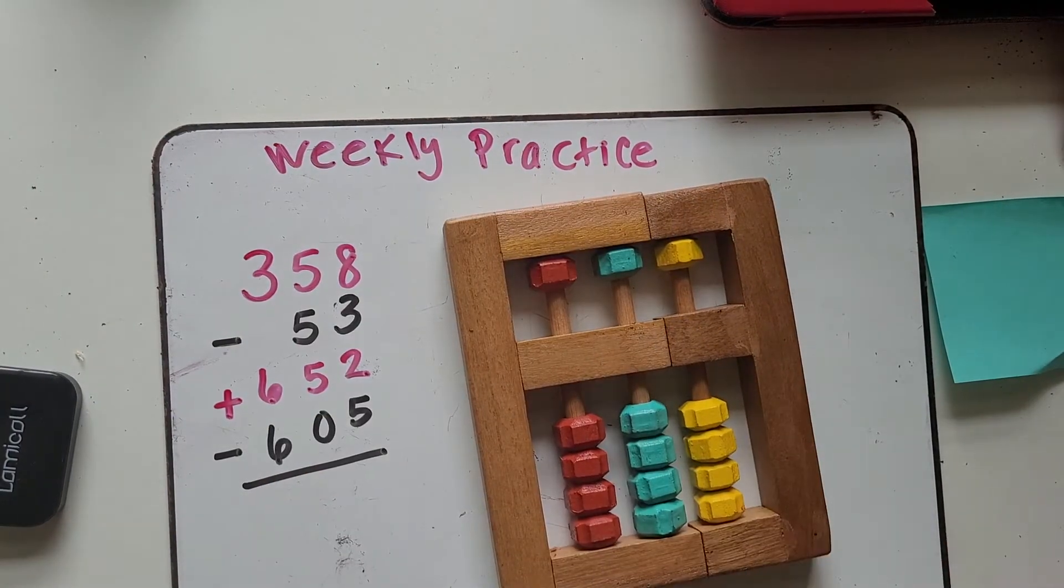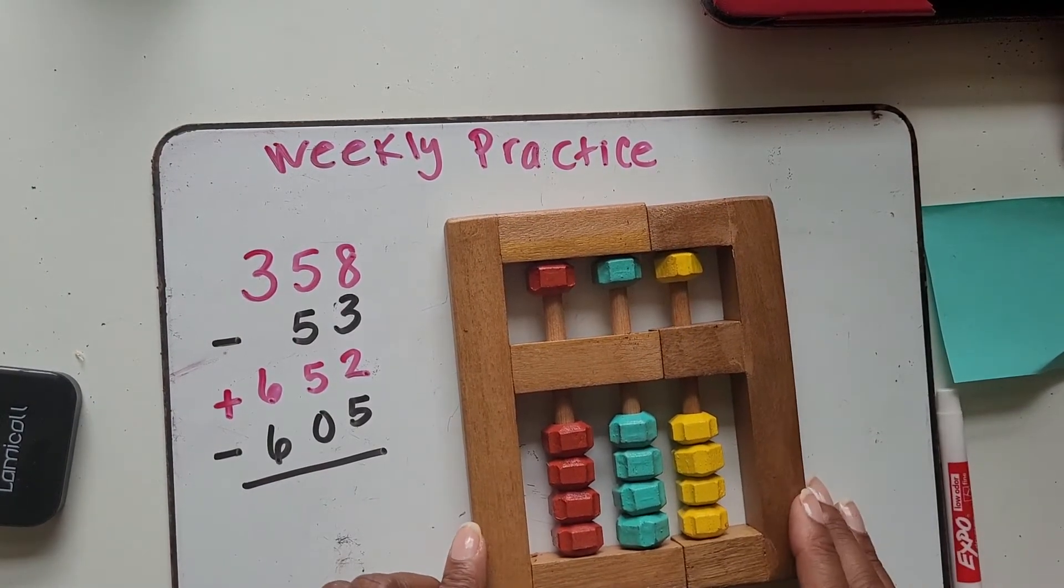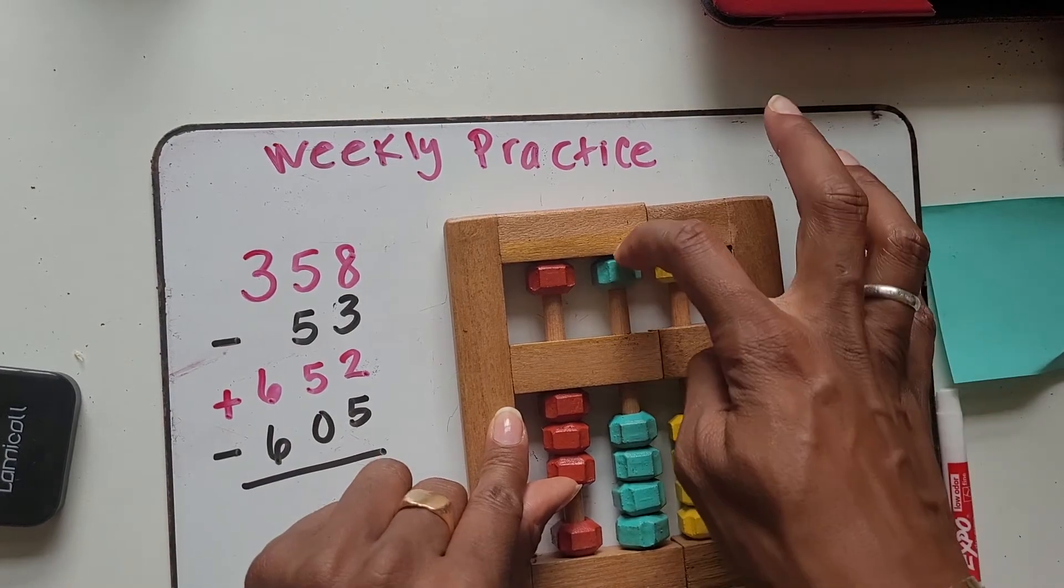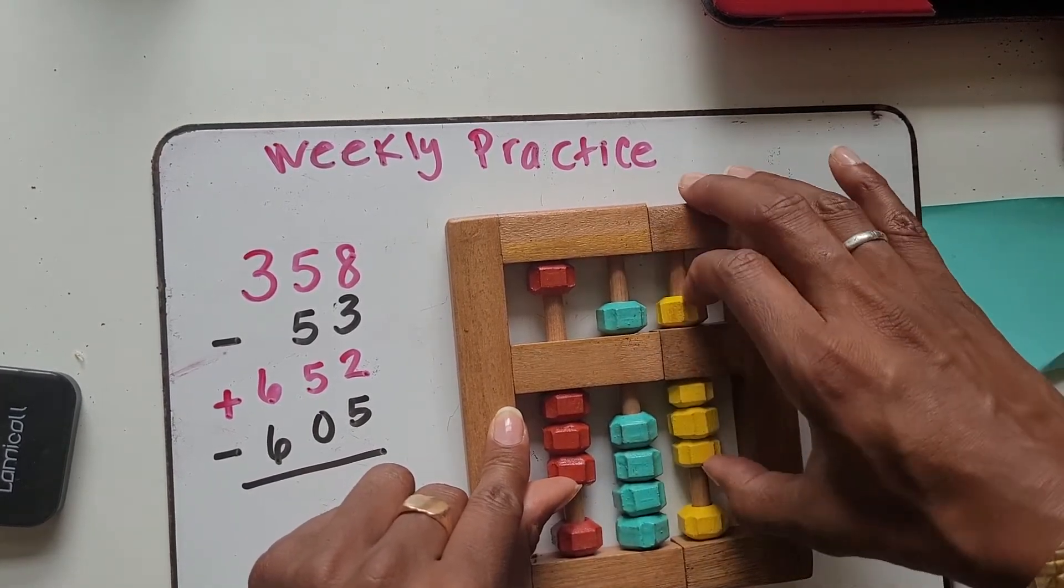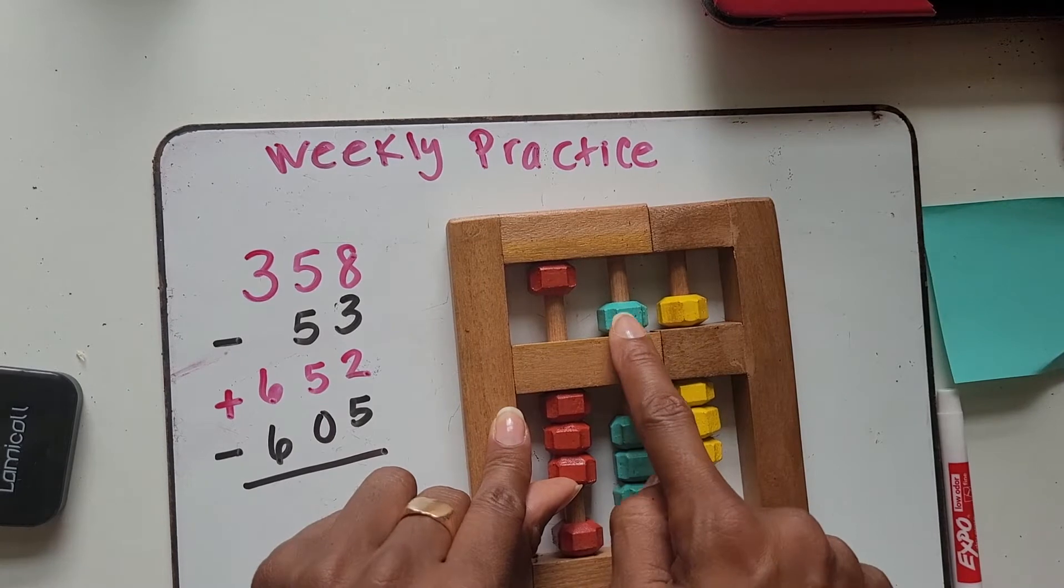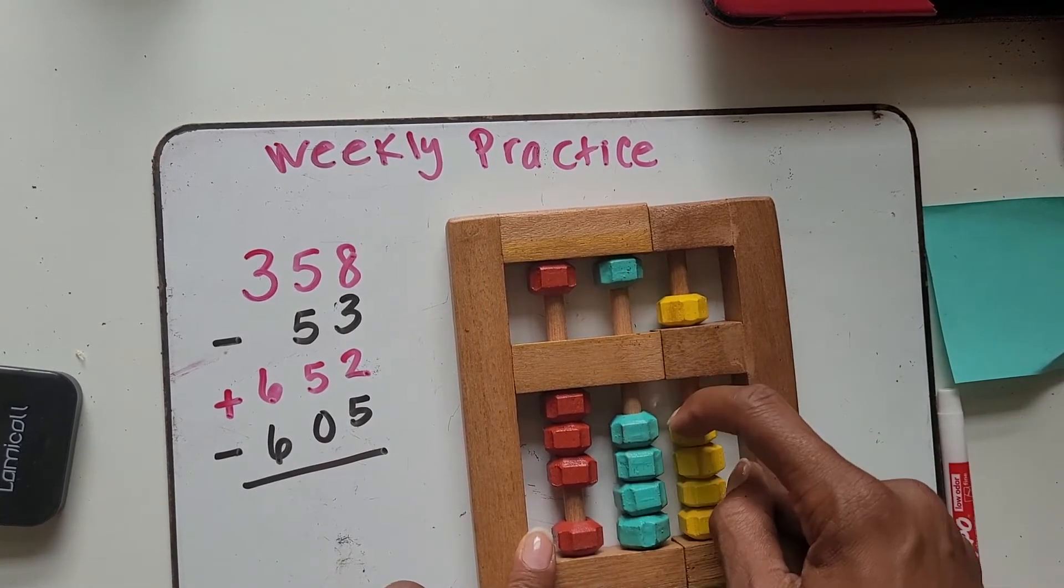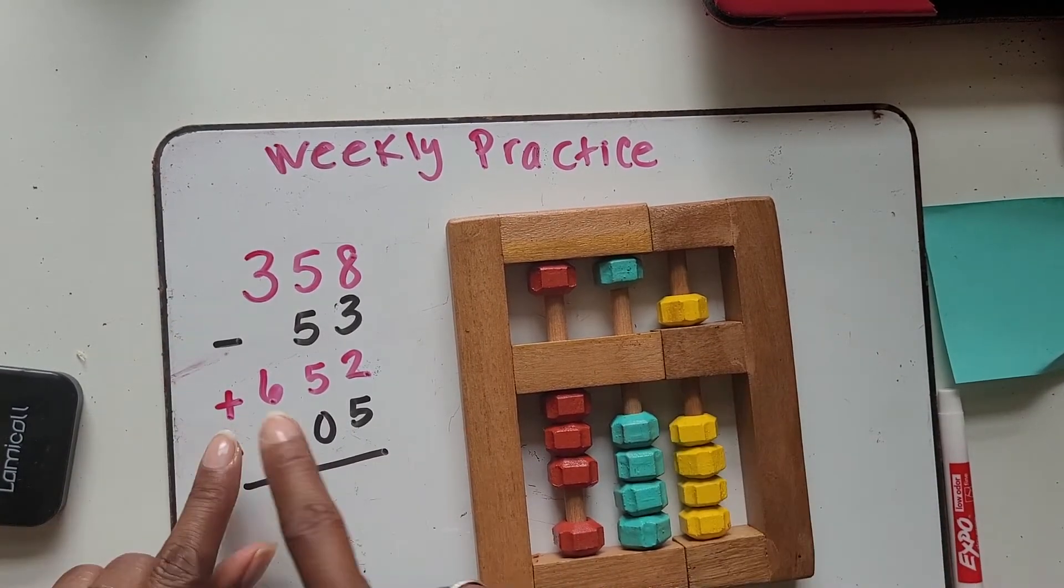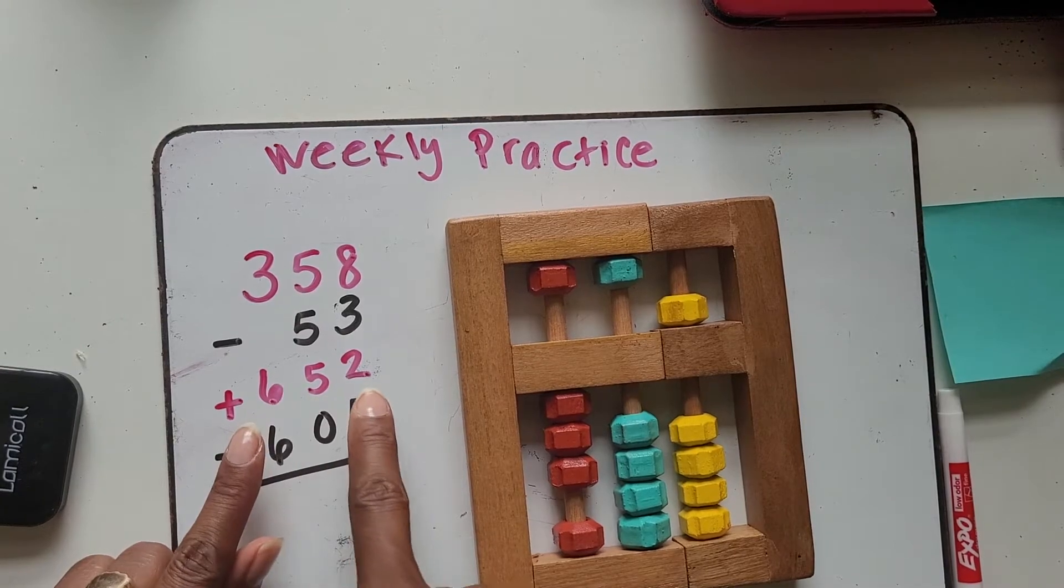Let's see what your final answer should have been. We had to add three tens, three hundreds, five tens, and eight ones. Then I needed to take away five tens and three ones. Then I needed to add six hundred, five tens, and two.